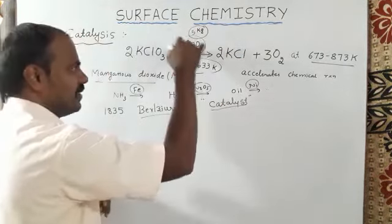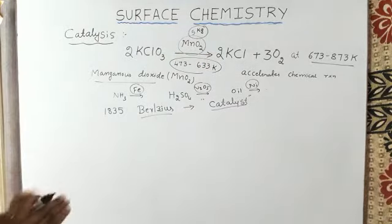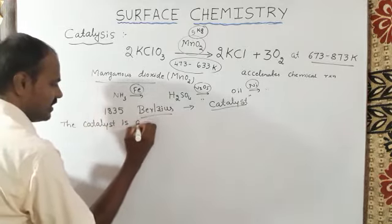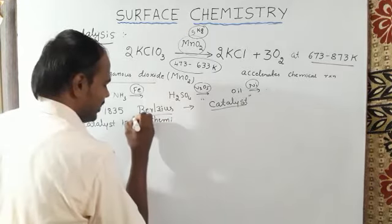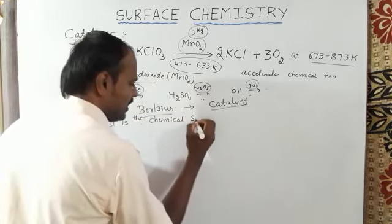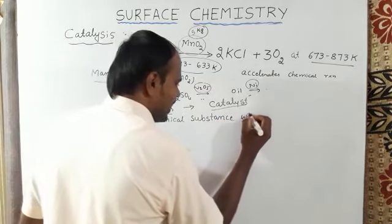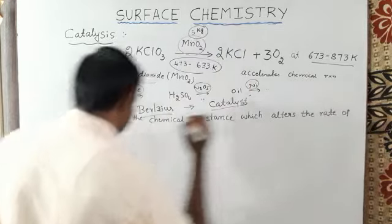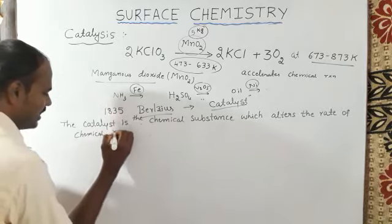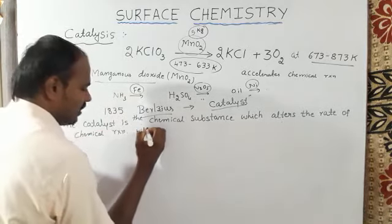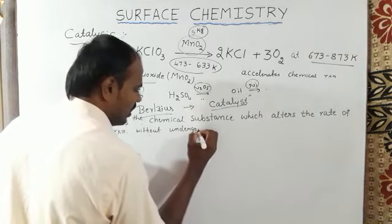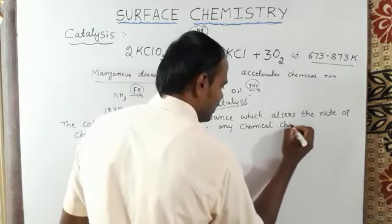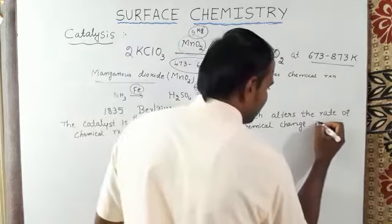After completion of the chemical reaction, the weight of MnO2 remains constant. There is no change in its mass. A catalyst is a chemical substance which alters the rate of chemical reactions without undergoing any chemical change. It is called a catalyst.